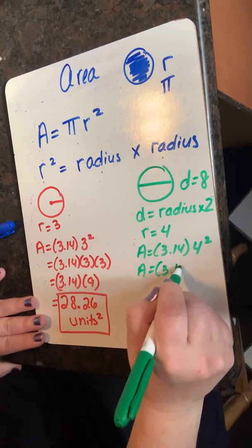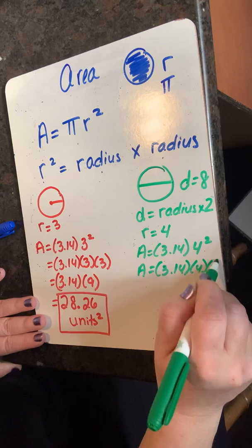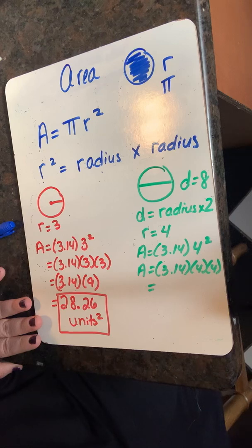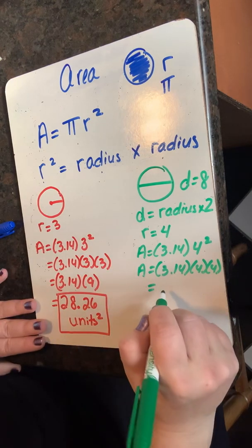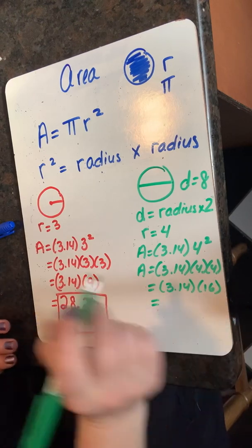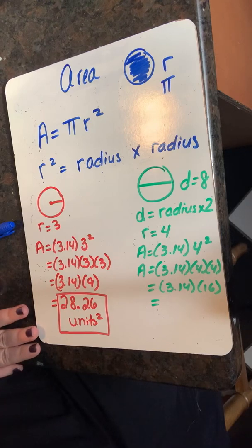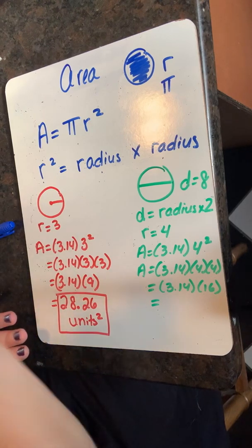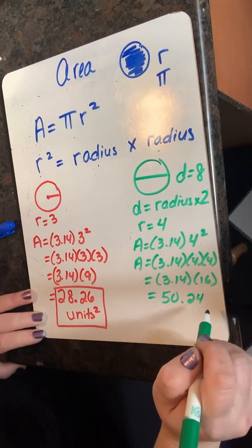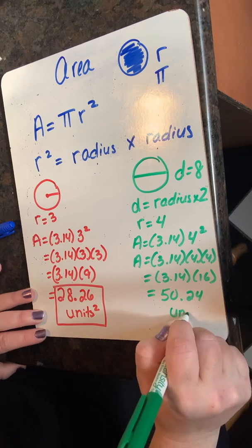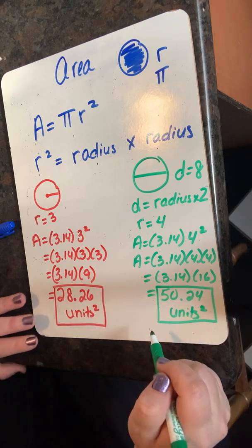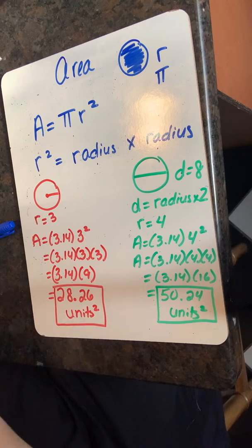Four squared is another way of writing four times four. Four times four is sixteen, so sixteen times pi. Cuatro por cuatro es dieciséis, dieciséis por pi. The area of a circle with a diameter of eight is 50.24 units squared. El área de un círculo con un diámetro de ocho es cincuenta y veinte sobre cuatrocientos unidades al cuadrado.